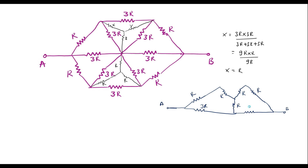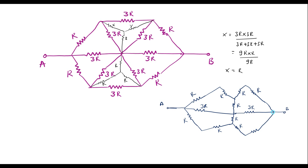This is point B, and this is 3R. Now similarly here we have R — 1R here, 1R here, 1R here, 1R here, and another R here. This is R, this is R, this is R, this is R, and again we have R here connected to this point. Now from this circuit we can observe that this R and this R are in series, this R and this R are in series, these two are in series, and these two are in series.